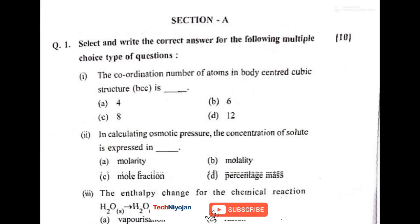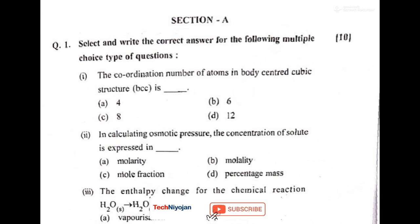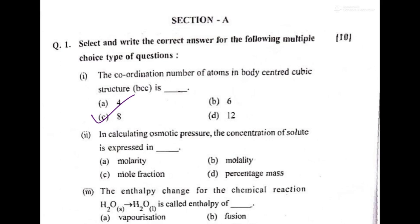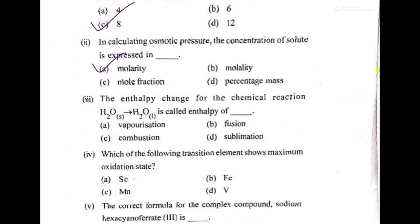We'll move forward. The first question in Section A: the coordination number of atoms in body-centered cubic structure, in this BCC, you can say it's 8. Then, in calculating osmotic pressure, the concentration of solute is expressed in molarity. Then the enthalpy change for the chemical reaction H2O solid state will give H2O liquid is called enthalpy of fusion.